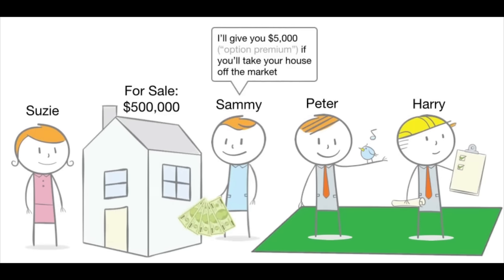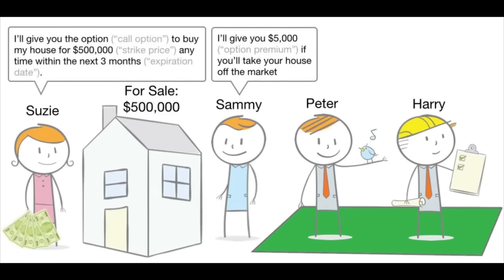Sammy is worried the house will be sold to someone else in the meantime, so he decides to offer Susie $5,000 — the option premium — right now, if she'll take the house off the market and give him the option. This would be a call option to buy the house for $500,000, referred to as the strike price, any time within the next three months, which is the expiration date. If he does not elect to buy the house, Susie keeps the $5,000 premium and Sammy walks away.